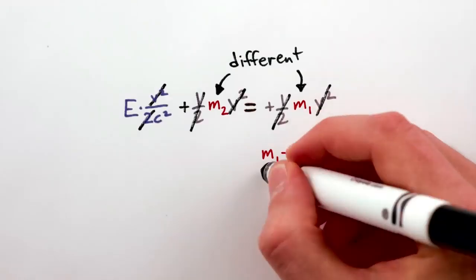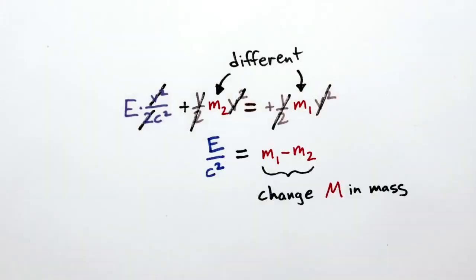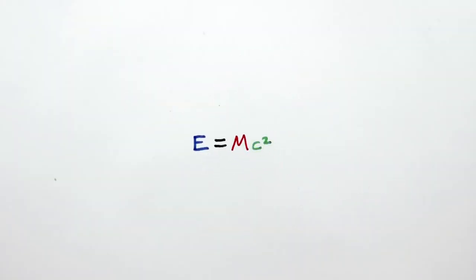Now, if we cancel things out, you can see that the change in mass of the cat must be equal to the energy of the light emitted divided by c squared, or as you've heard before, E equals mc squared.